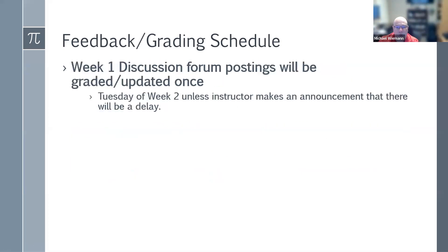Discussion forum posts: as mentioned, this is probably the most rigid grading component in the class for week one. The initial post needs to be done by Thursday, and two quality responses done by Sunday at 11:59 p.m. Feedback will be available no later than Tuesday of week two. Typically I do them on Mondays, but I have until Tuesday of week two. You can generally look Monday morning and I will have feedback posted on those discussion forums.